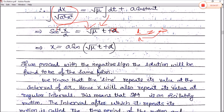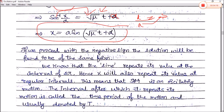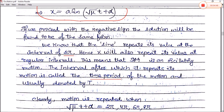Since the sine function has a period of 2π (360 degrees), x will also repeat its value at regular intervals. This means that simple harmonic motion is an oscillatory motion, and the interval after which it repeats is called the time period of the motion, denoted by capital T.